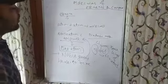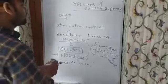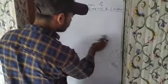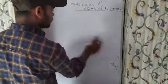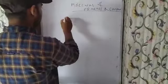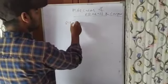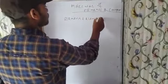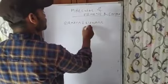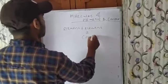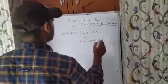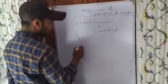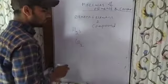We discussed that in the previous class. But molecules of compounds — that is important. Compounds means when element and element combine together, they form a compound. Like water, H2O. Like carbon dioxide, CO2.